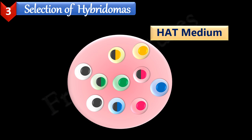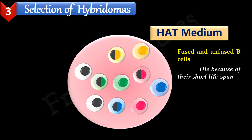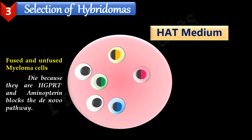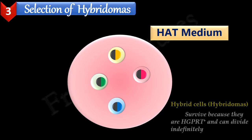In this step, the mixture of cells obtained after the fusion step is transferred to the HAT medium. Fused and unfused B cells die within a few days because of their short lifespan — they are not able to divide indefinitely in cell culture. Fused and unfused myeloma cells also die, because myeloma cells are HGPRT negative and aminopterin present in the HAT medium blocks the de novo pathway. Hybrid cells or hybridomas survive in HAT medium. These hybrid cells are able to synthesize nucleotides by the salvage pathway — the functional HGPRT enzyme is contributed by the activated B cell partner. Also, these cells are able to divide indefinitely, and this property is contributed by the myeloma cell partner. Therefore, what remains in HAT medium are the desired hybrid cells producing antibodies against the specific epitopes on the antigen.